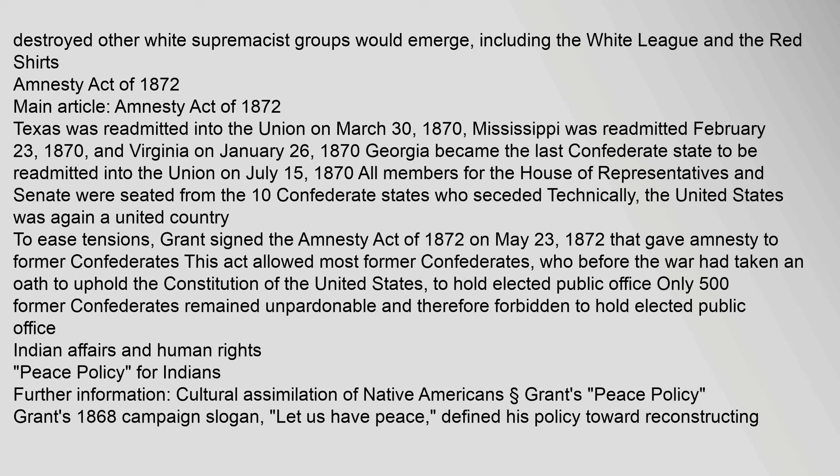Texas was readmitted into the Union on March 30, 1870; Mississippi on February 23, 1870; Virginia on January 26, 1870; and Georgia became the last Confederate state readmitted on July 15, 1870. To ease tensions, Grant signed the Amnesty Act of 1872 on May 23, 1872, giving amnesty to former Confederates. This act allowed most former Confederates who had taken an oath to uphold the Constitution to hold elected public office. Only 500 former Confederates remained unpardonable and therefore forbidden to hold elected public office.